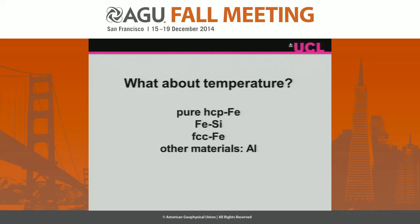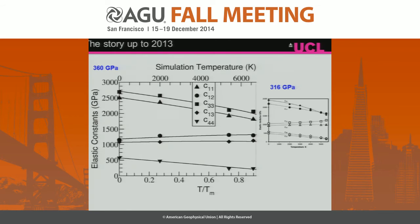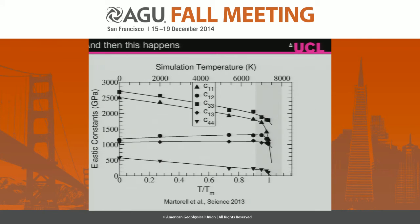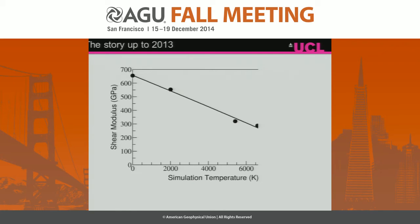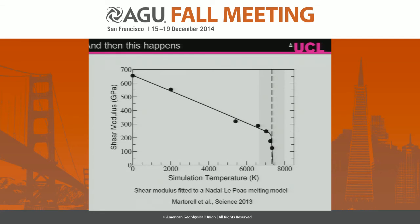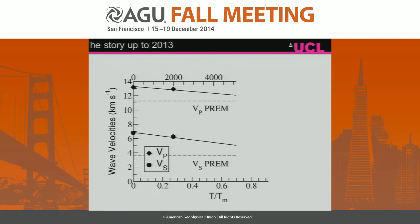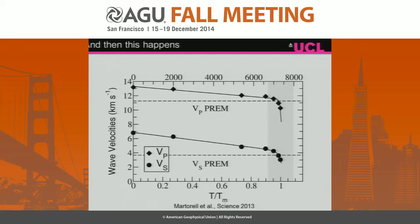We did this for pure iron, then added some light elements and looked at other materials. Up until last year, simulations of elastic constants at 360 GPa up to 5,000 or 6,000 degrees varied not very much and fairly linearly. But heating further, we found a significant reduction in all elastic constants, propagating through to the shear modulus and shear wave velocities.